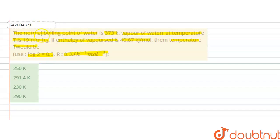In this question we are given that the normal boiling point of water is 373 Kelvin and vapor pressure of water at temperature T is given as 19 millimeters of mercury and enthalpy of vaporization is also given. So we have to calculate the temperature T.